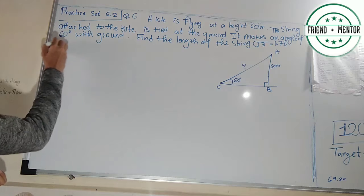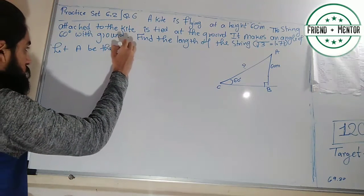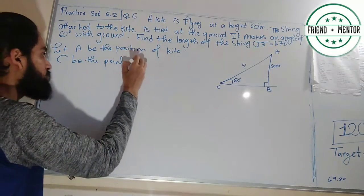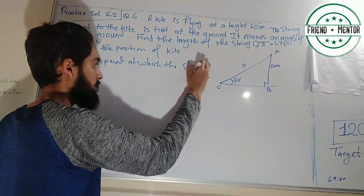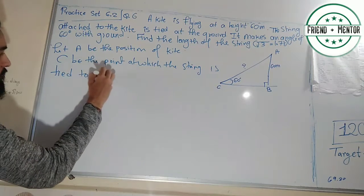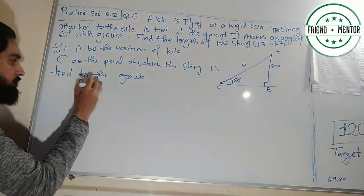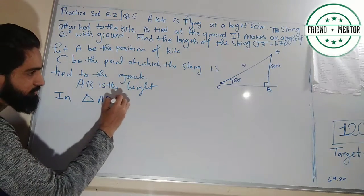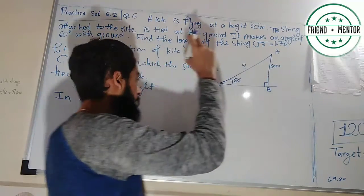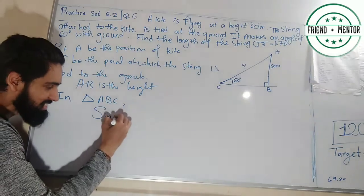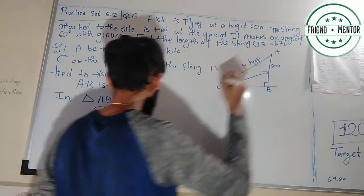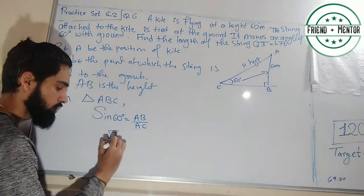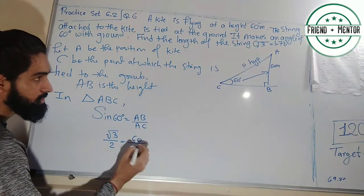Let A be the position of the kite and C be the point at which the string is tied to the ground. AB is the height. In triangle ABC, the angle at C is 60 degrees. The opposite side AB is known (60 m) and the hypotenuse AC is to be found. Using sine: sine 60° equals opposite upon hypotenuse, that is AB upon AC.